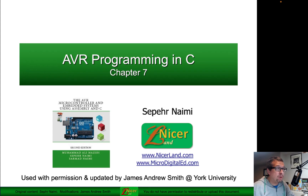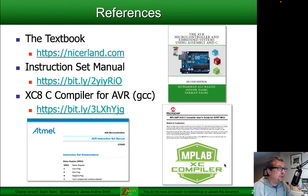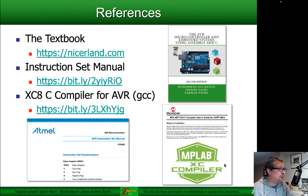Hello, so today we're going to be talking about AVR programming in C. This comes from Chapter 7 of the AVR Microcontroller and Embedded Systems Using Assembly and C Textbook by Mazidi, Naimi, and Naimi, and you can find this textbook at nicerland.com as well as places like Amazon. I refer you to the instruction set manual for the AVR Microcontroller as well, and there is a C compiler document for AVR from Microchip, or there are other documents from Atmel previously on GCC and the AVR Microcontrollers.